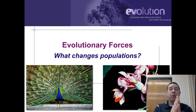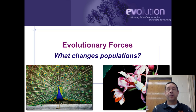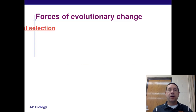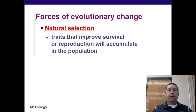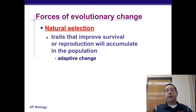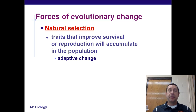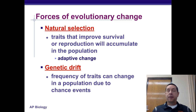In this video, we're going to begin to look at what are the evolutionary forces that change populations' allele frequencies. The two main forces that cause evolutionary change are natural selection — traits that improve survival and reproduction will accumulate or become more common within the population — and genetic drift, where random chance events change allele frequencies.